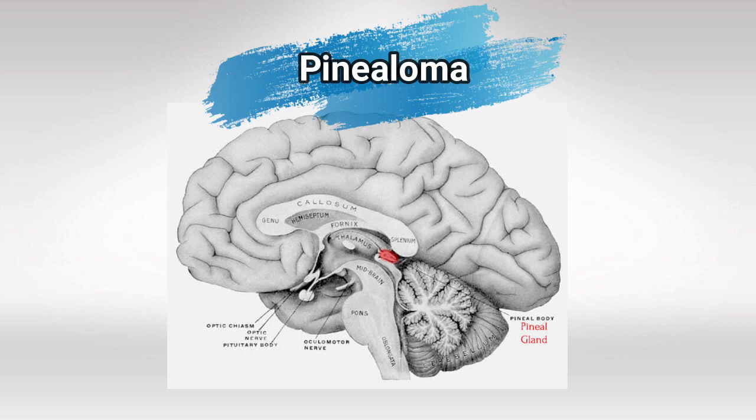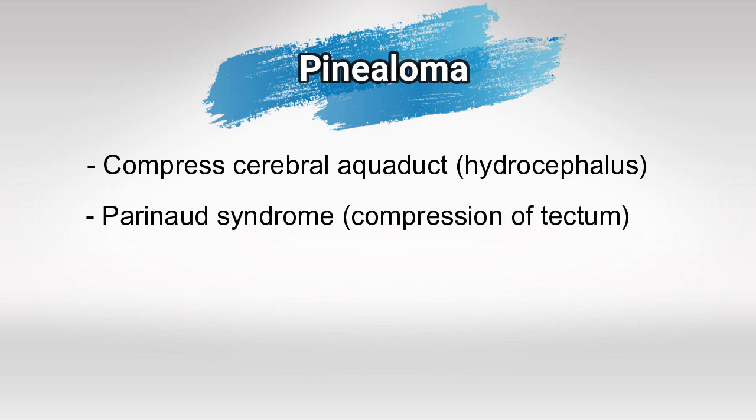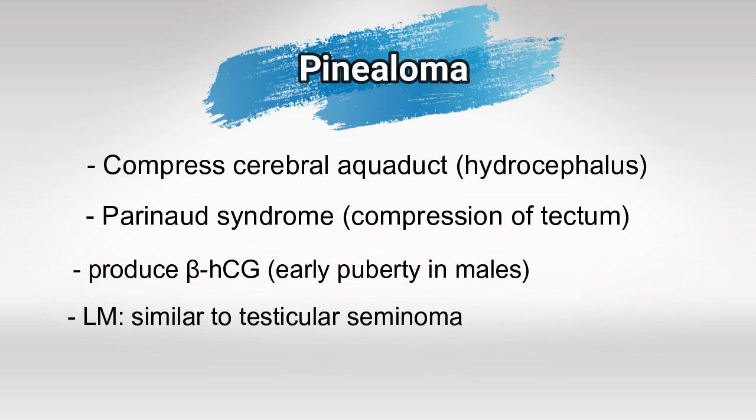Finally we have pinealoma. Pinealoma is a tumor arising from the pineal gland — a small gland located here. Pinealoma can compress the cerebral aqueduct causing hydrocephalus, and it can also compress the brainstem tectum causing Parinaud syndrome. Pinealomas also produce beta-HCG, which can cause early puberty in males. Under the microscope it is highly similar to testicular seminomas.